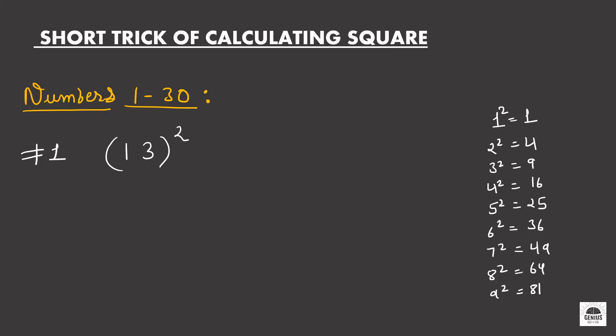Hello everyone. In this video we will learn shortcut tricks of calculating squares from numbers 1 to 30. For this you should know the square of single digit numbers from 1 to 9. To find out the square of any number, just mark 3 blanks here. This is your first step.